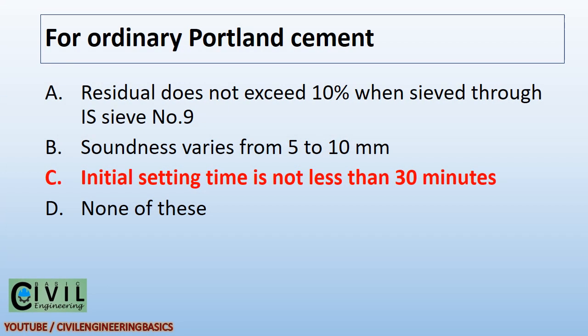For ordinary Portland cement, initial setting time is not less than 30 minutes.